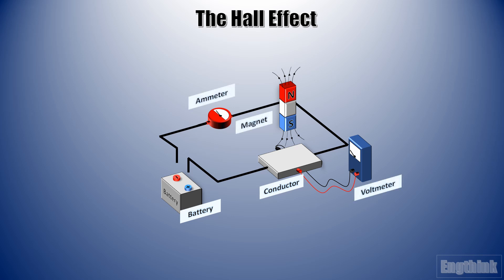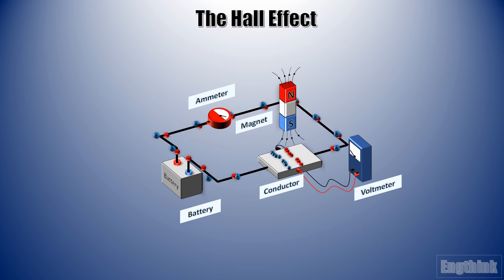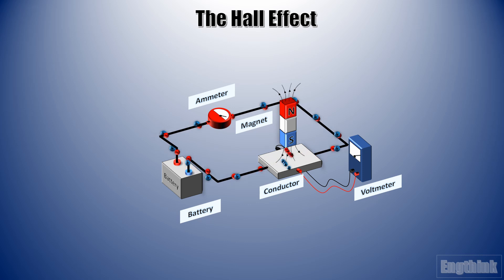When the battery is connected to the circuit, it's possible to observe that the positive and the negative charges are mixed across the conductor. However, when a magnetic field is applied perpendicular to the direction of the electrical field, the moving electrons experience a force that pushes them to one side of the conductor. As a result, a build-up of negative charge occurs on one side of the conductor and a build-up of positive charge occurs on the other side.